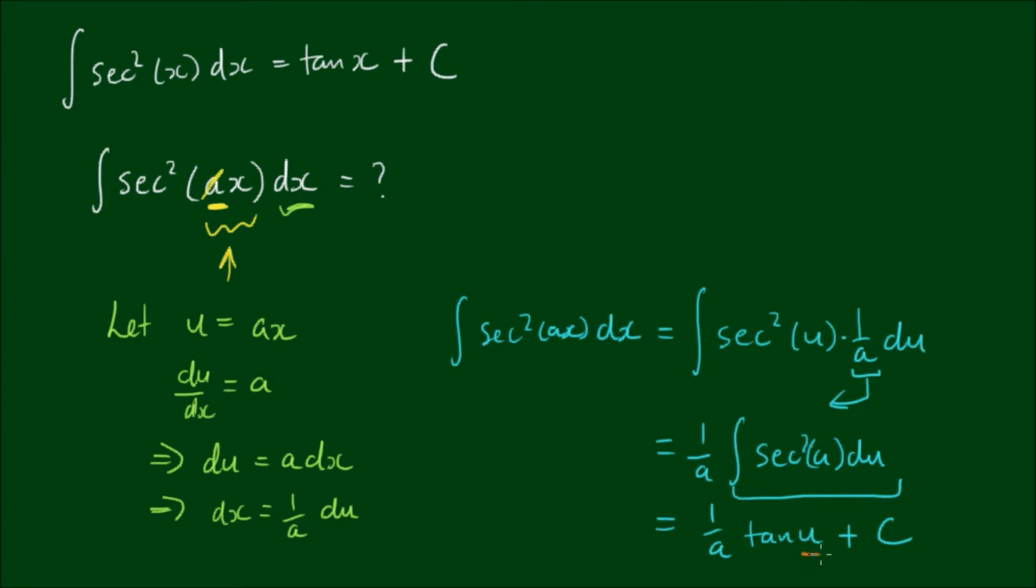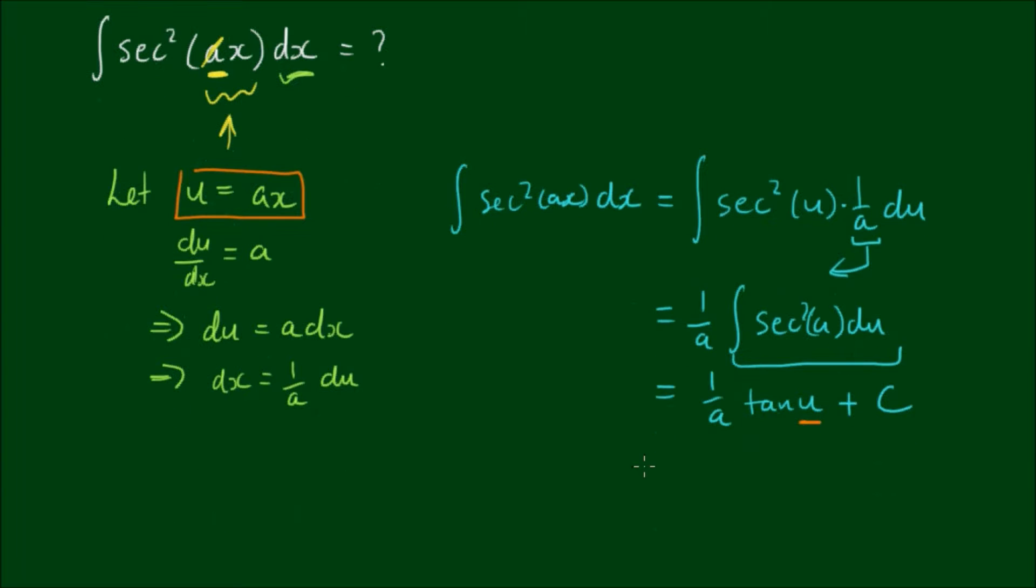Okay, we're not quite finished yet because we need to reverse substitute u for ax. So to finish off, we have the integral of sec squared dx equals 1 on a by tan of ax plus an integration constant C.